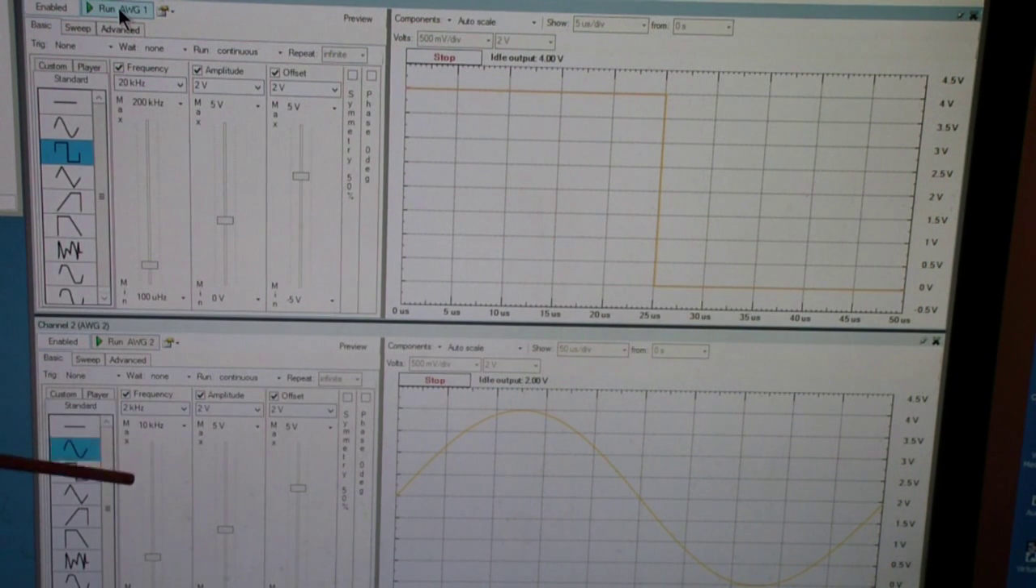Here is the computer screen for the computer connected to the analog discovery. At the top is arbitrary waveform generator 1, at the bottom is AWG 2. The signal from 1 is a square wave at 20 kilohertz. The signal at the bottom is a sine wave at 2 kilohertz. This is the carrier, this is the intelligence signal.